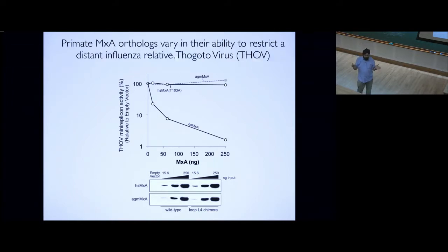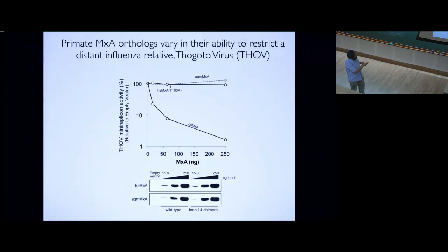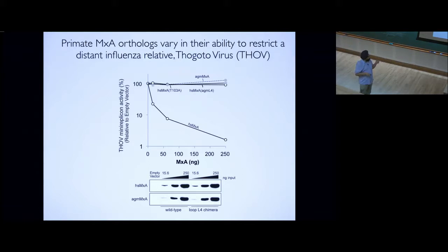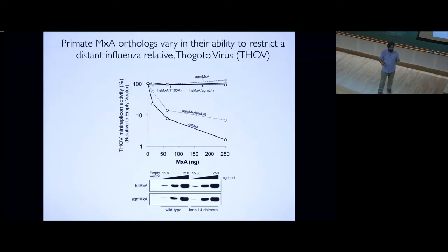Our biochemist friends suggested making chimeras, but evolutionary biologists want to do the minimum number of experiments to get to the answer. So we decided to go after the hotspots of positive selection, starting with loop L4 as the biggest hotspot. We put the loop L4 residues from African green monkey into a human MXA backbone at those rapidly evolving sites — they happen to be identical at two of the five residues, so we basically swapped in three amino acid mutations — and you completely lose human-like restriction. If you do the reverse experiment, you essentially confer almost complete gain of protection.